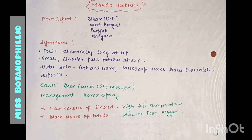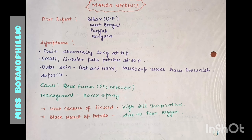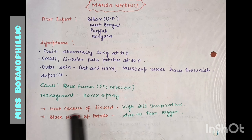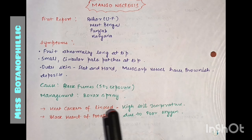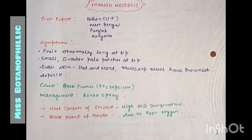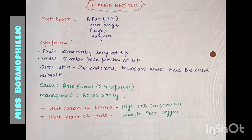For exam purposes, if you have a short question, two examples are enough. Give a general introduction of non-parasitic disease and then describe these two examples. Additional examples include heat canker of linseed, caused by high soil temperature, and black heart of potato, which is non-parasitic and caused by poor oxygen supply. There are many examples you can also read in detail.